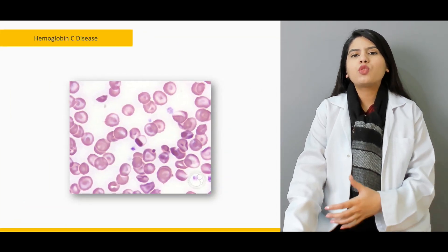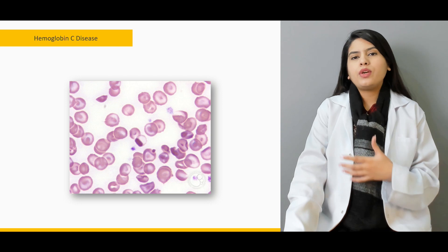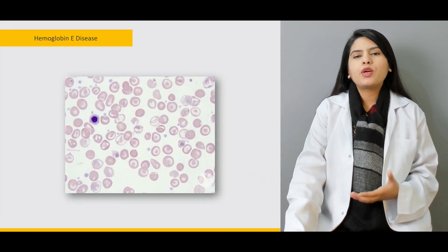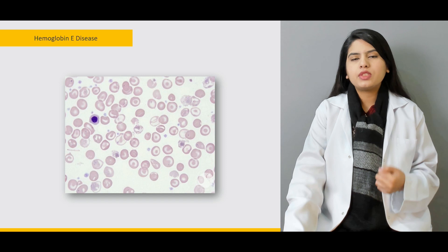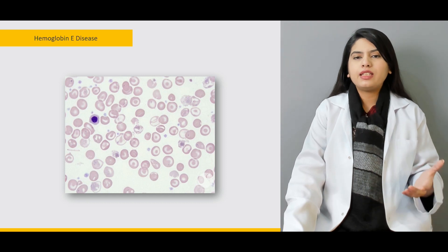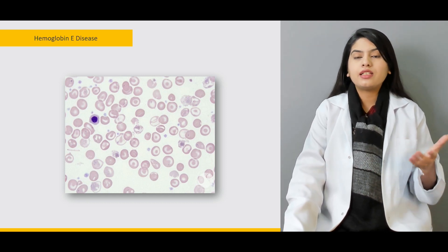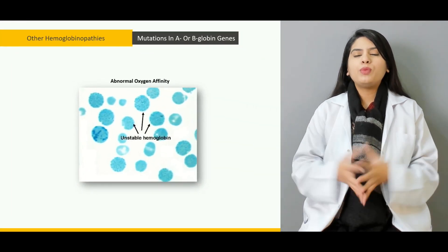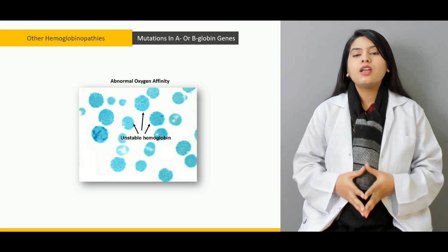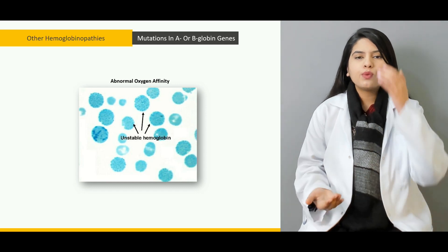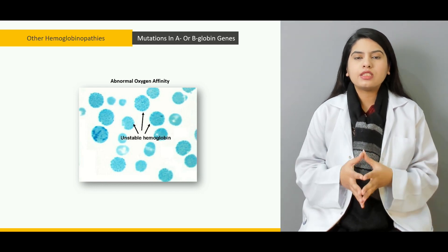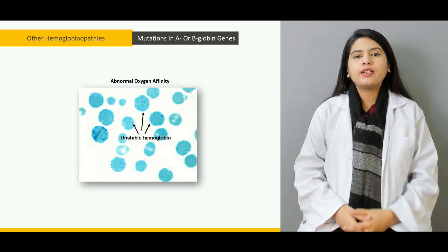Then we will talk about hemoglobin C disease — how it progresses, its pathogenesis, and how it appears on histological slides. We will also discuss the features of hemoglobin E disease, its pathological characteristics, its clinical features, and how it is related to thalassemia, as it is considered a thalassemia-like disease. Then we will discuss the hundreds of other structural variants of hemoglobinopathies, covering them in two categories: unstable hemoglobin and abnormal oxygen affinity. With that, we will enter today's lecture.